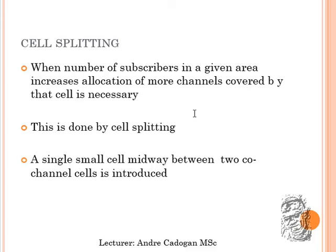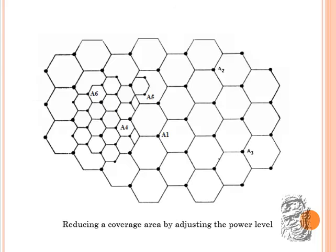Cell splitting is done because of a given number of subscribers within a particular area requiring increased allocation. For example, a number of individuals coming into Port of Spain, San Fernando, or Tobago would want to use frequencies there to make calls. These cellular structures must be split in order to accommodate the number of individuals who have cellular phones. Cell splitting is done basically to increase the number of subscribers by splitting the cells.